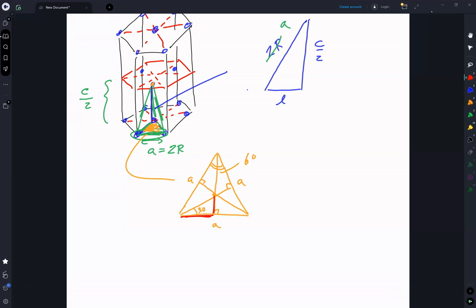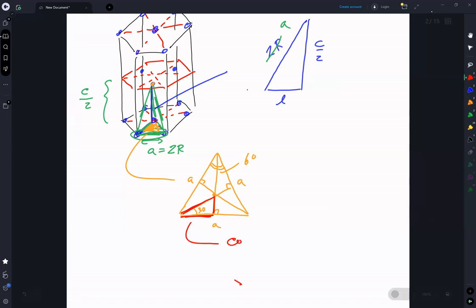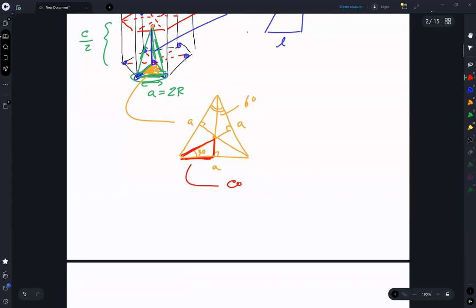So this triangle, this right triangle, allows us to say that the cosine of 30 degrees is equal to A over 2, that distance, divided by L, which is that distance.